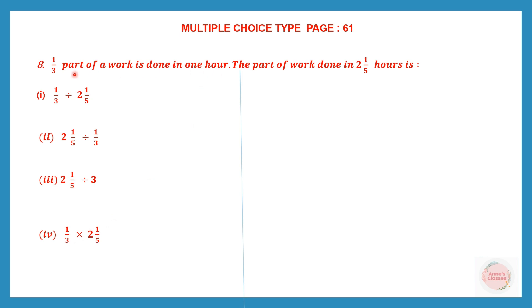In 1 hour, one-third of a work is done. So in 2⅕ hours, how much of work will be done?